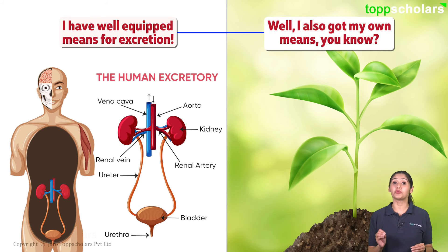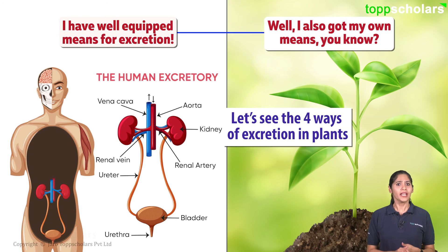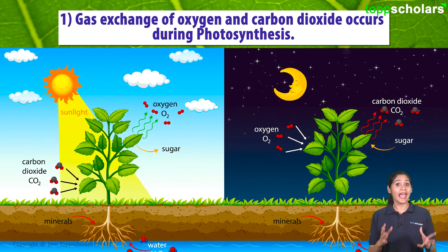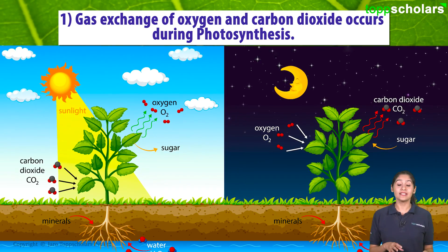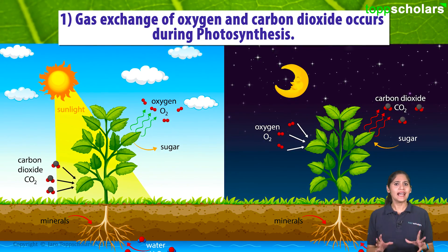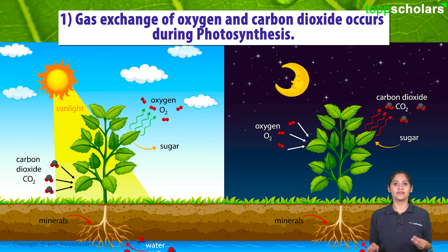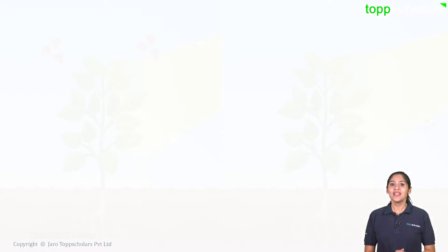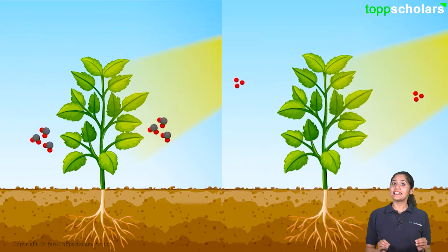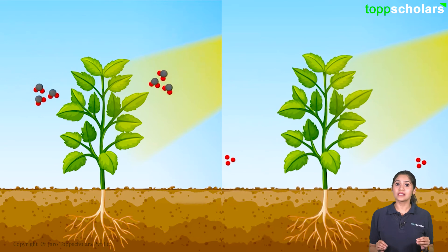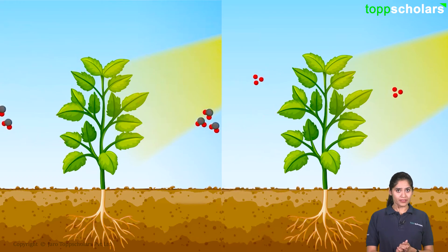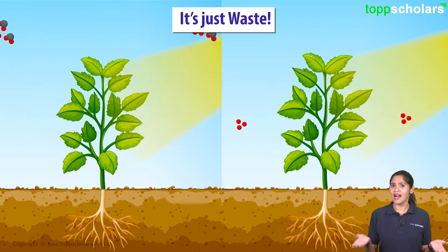In fact, there are four of them. The first one is very well known — gas exchange of oxygen and carbon dioxide, which we have also studied while learning photosynthesis. We can say that the byproduct of photosynthesis is crucial and very important for our survival, unlike our waste which is just waste.